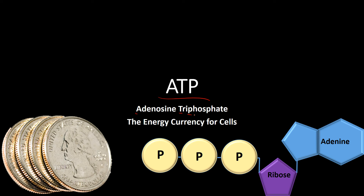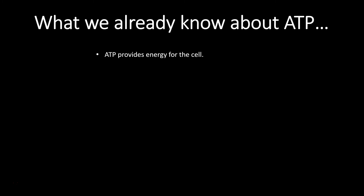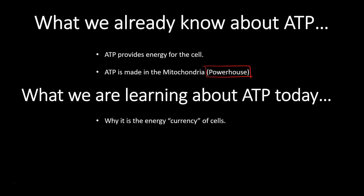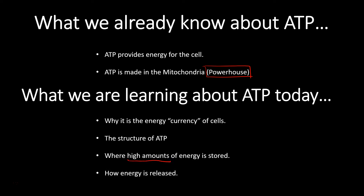ATP is commonly called the energy currency for cells. Before we go and talk about this, let's do a recap of what we already know about ATP and then what we're going to cover. We know ATP provides energy for cells, and it's made in the mitochondria, the powerhouse of the cell. Today we're going to cover: why it's called the energy currency, the structure of ATP, where high amounts of energy are stored, how that energy is released, and how ATP can be recycled or replenished.